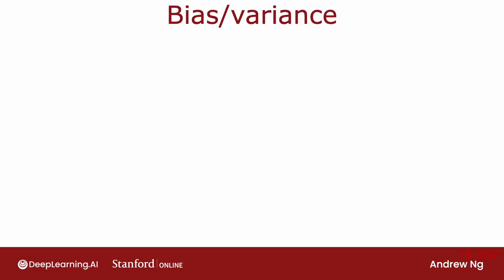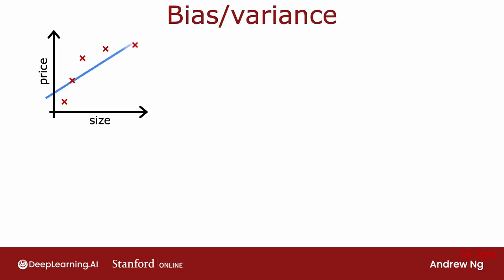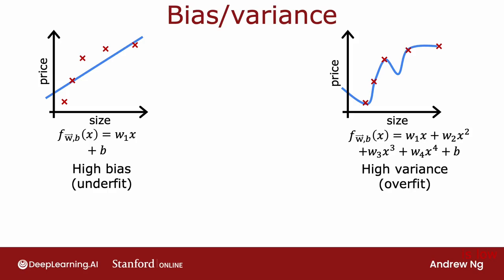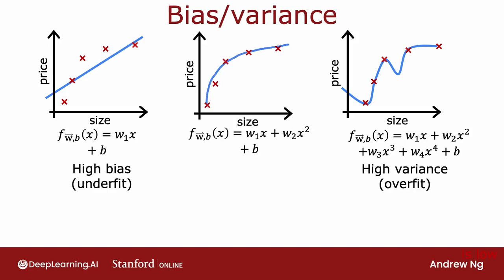You might remember this example from the first course on linear regression. Given this dataset, if you were to fit a straight line to it, it doesn't do that well — we said this algorithm has high bias, or that it underfits the data. If you were to fit a fourth-order polynomial, it has high variance, or it overfits. And in the middle, if you fit a quadratic polynomial, it looks pretty good — that was just right.